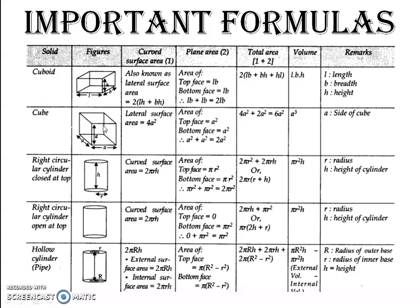Now, cube. All 6 faces of a cube are equal. The curved surface area — that means lateral surface area, not including top and bottom — is 4A². The total surface area is 4A² plus top and bottom area, that means 6A². Volume is side × side × side, that is A³.